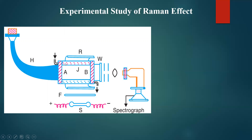The experimental liquid is placed inside AB and a circulating water jacket surrounds this liquid. This jacket also has a transparent glass tube. Water continuously circulates around the liquid in order to prevent overheating of the liquid.